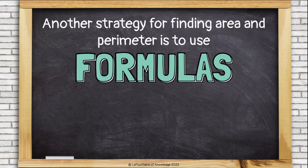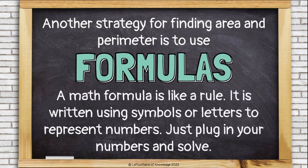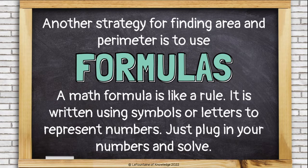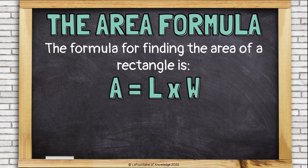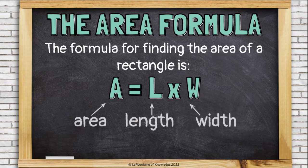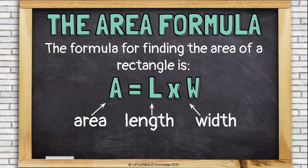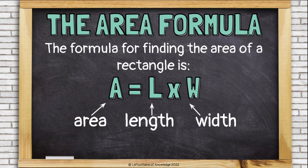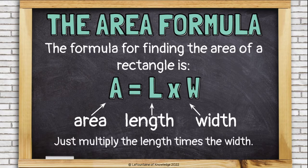Another strategy for finding area and perimeter is to use the formulas. A math formula is like a rule. It's written using symbols or letters to represent numbers. You just have to plug your numbers in and solve. So let's look at the formula for area. A equals L times W. So A means area. L stands for length and W stands for width. So basically, all we have to do to find the area of a rectangle is multiply the length and the width together.